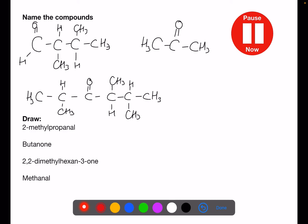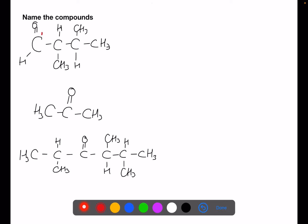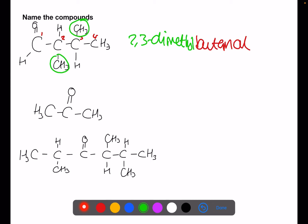Pause the video now and try to name and draw these compounds. In this first example we're going to number from the left where we've got the C=O, so we've got four carbons — based on butan-. The C=O is on number 1 so we're going to end in butanal. Then we look at branches: we've got two branches on numbers 2 and 3, they're the same, so 2,3-dimethylbutanal. In the next example it doesn't matter which way you number because it's symmetrical. The carbon with the C=O is number 2, but because there's no other position for a ketone you don't actually need to put the number in — this one is just propanone.